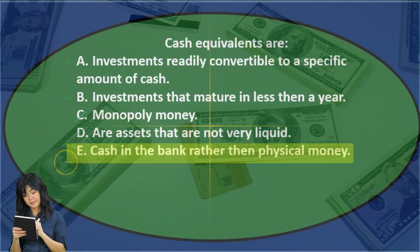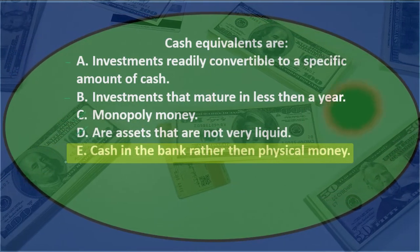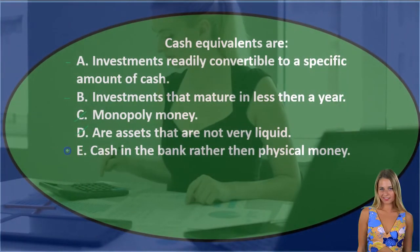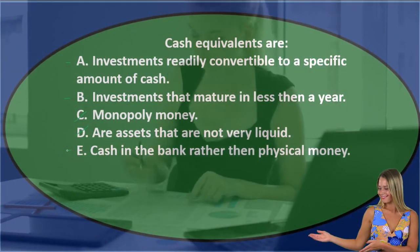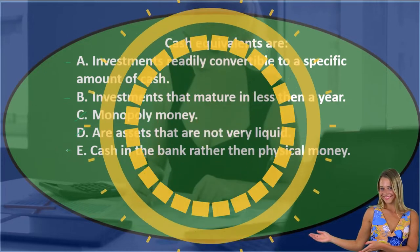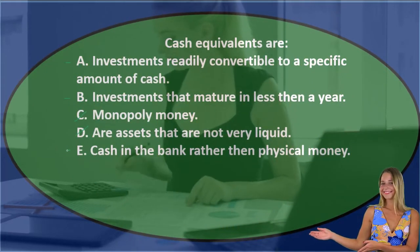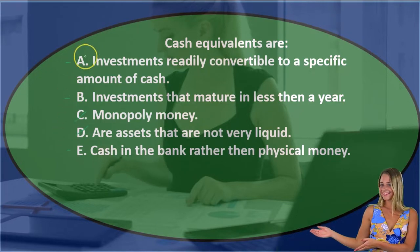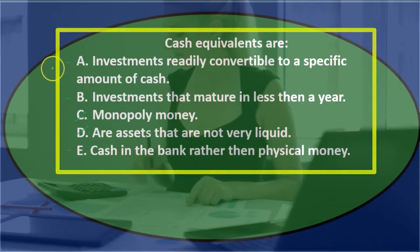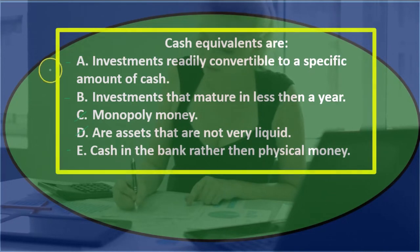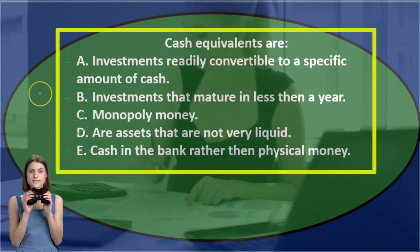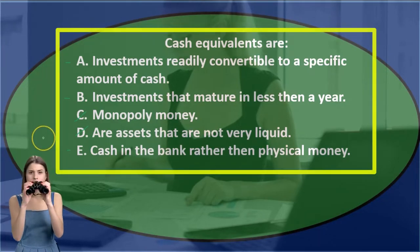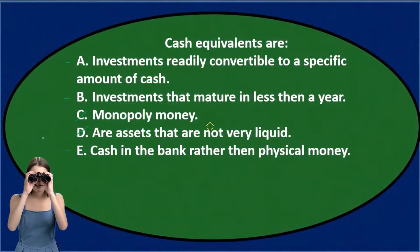E says cash in the bank rather than physical money. If we didn't really know what a cash equivalent is, that might seem reasonable — cash in the bank versus money cash. So we'll keep A, B, and E for now. Cash equivalents are A. investments readily convertible to a specific amount of cash, B. investments that mature in less than a year, or E. cash in the bank rather than physical money.